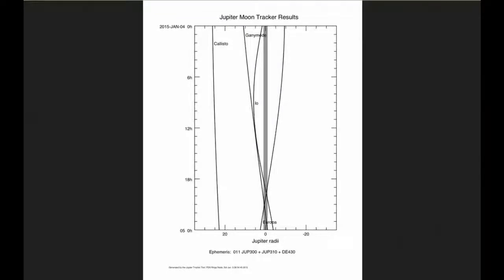At 0 hours UTC, Io begins the day in Quadrant 1 heading east. Europa starts the day in Quadrant 4, also heading east. Ganymede spends most of the day in Quadrant 2 heading west, and Callisto spends all day in Quadrant 2, also heading west.